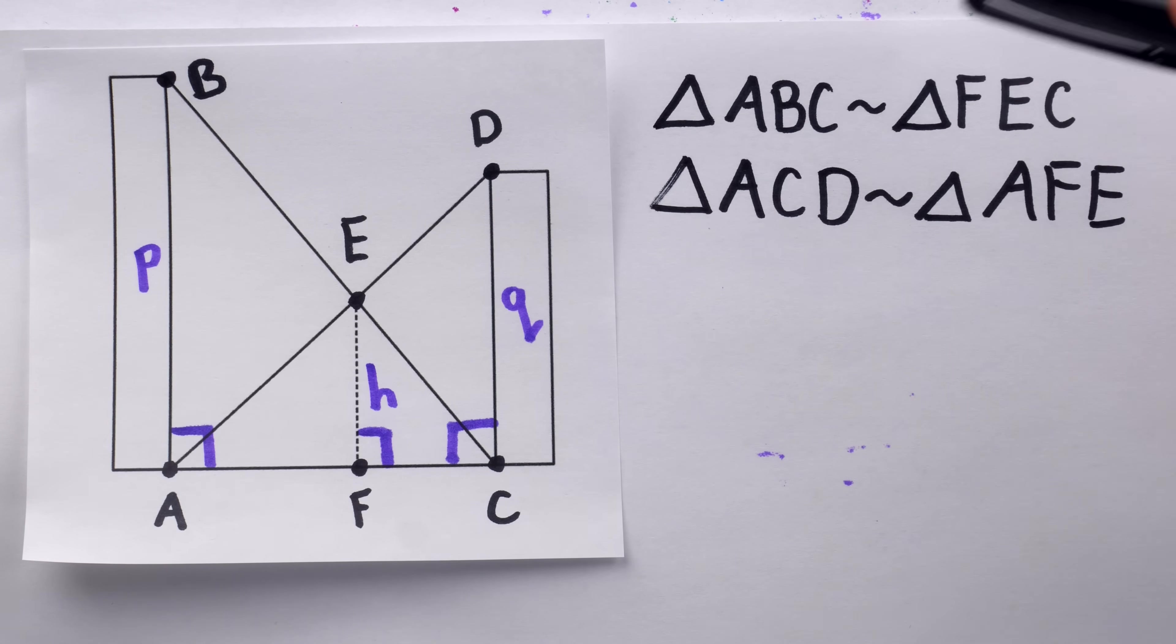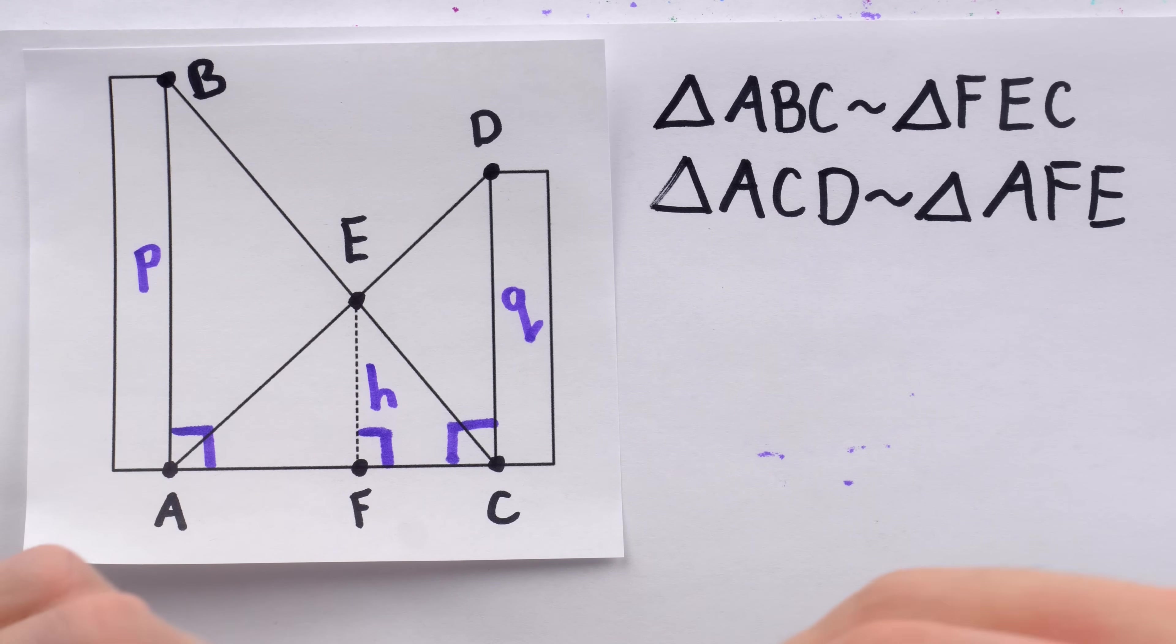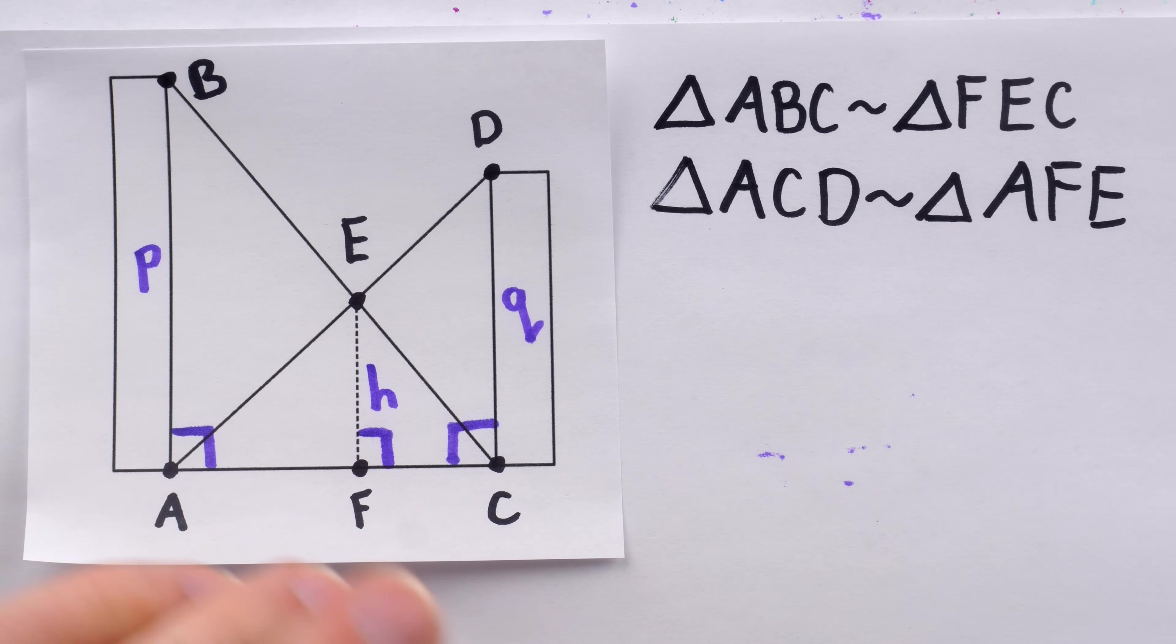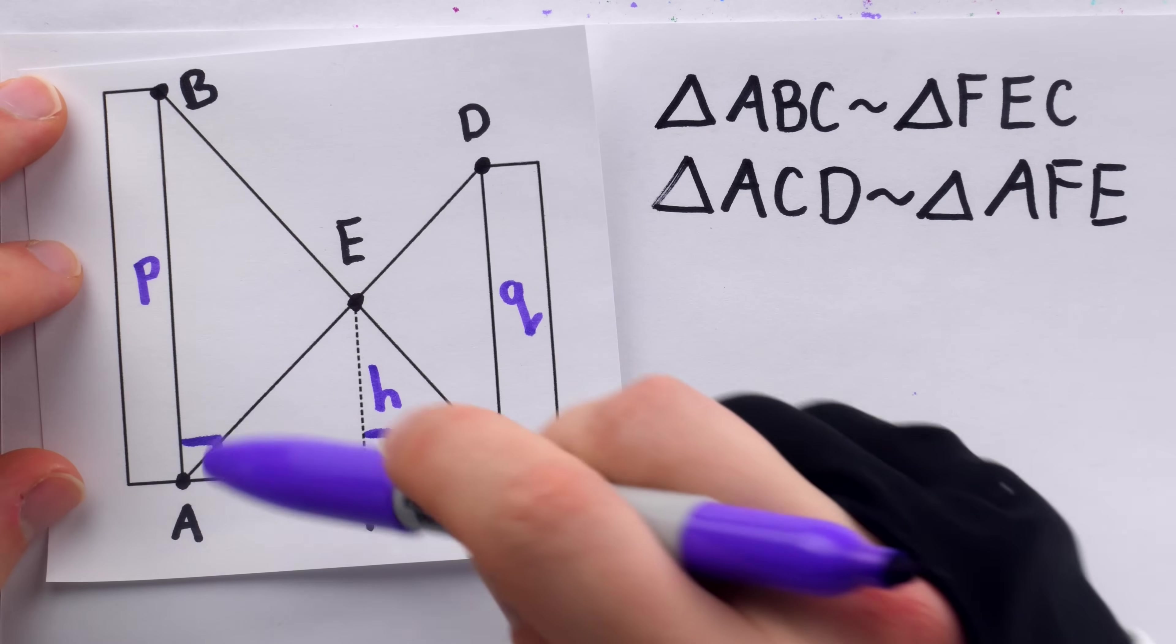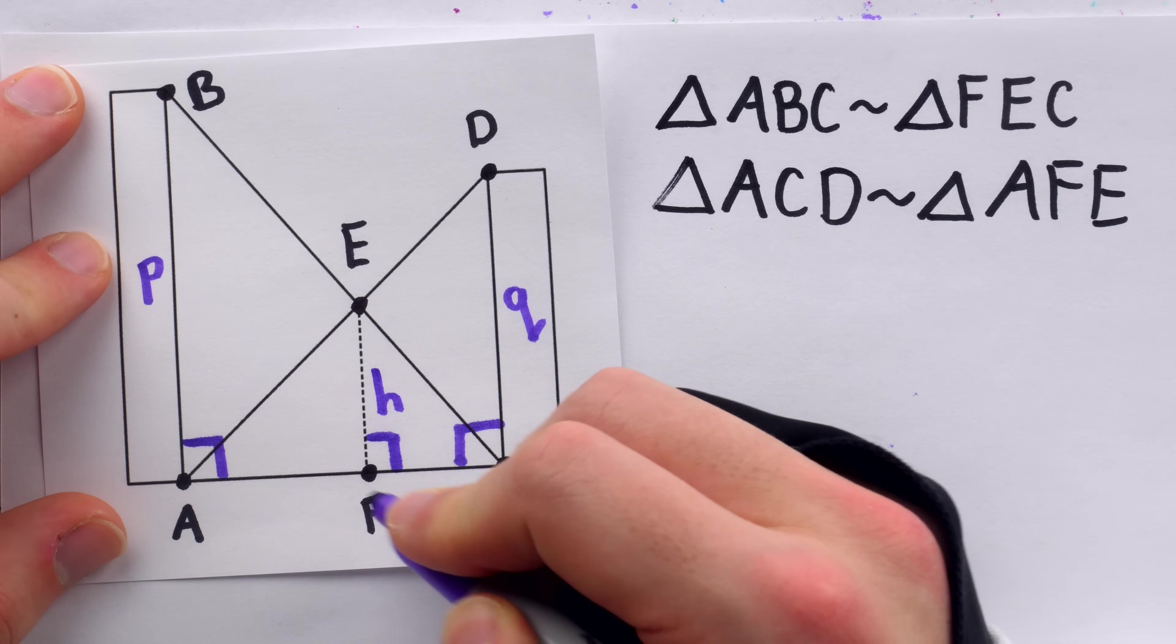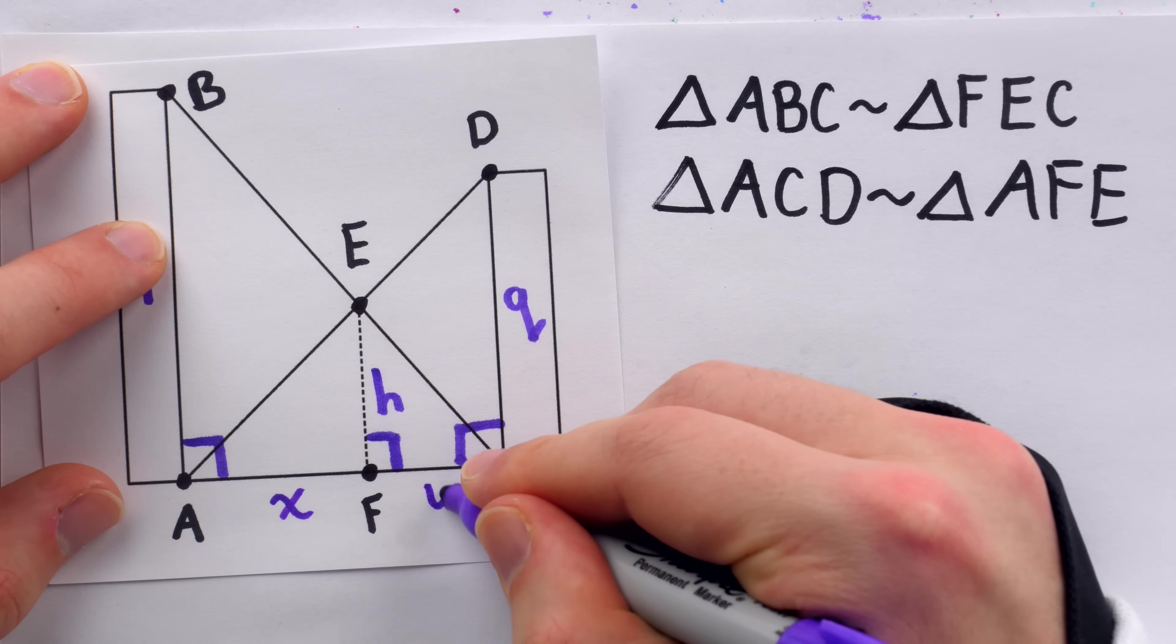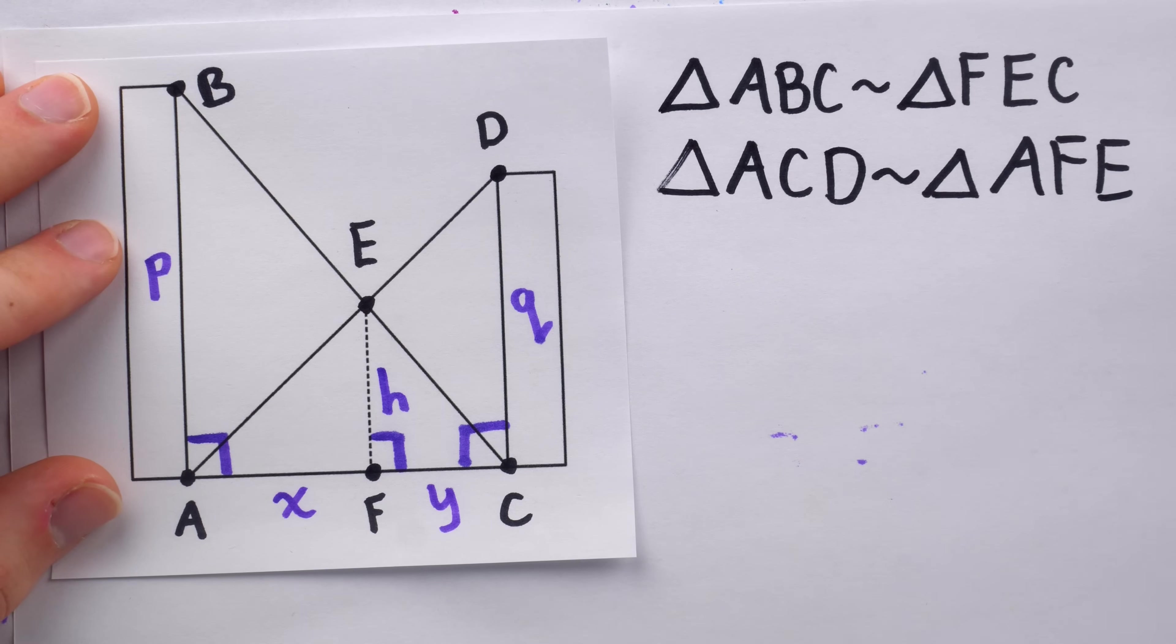With these similarities established, we can start to write some equations based on the proportionality of corresponding sides between similar triangles. Now to do that, it will be useful to first label a couple more lengths here, with single letters, so that we don't have to write segment names like AB and AF over and over again. Let's call this distance here from A to F, X, and we'll call this distance from F to C, Y. So the length of AC total is X plus Y.